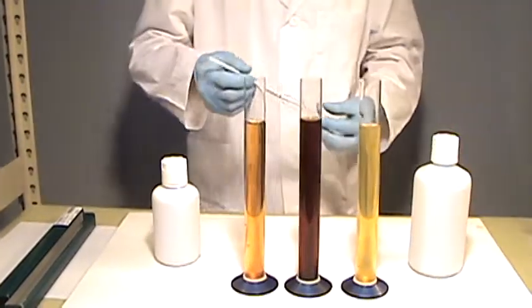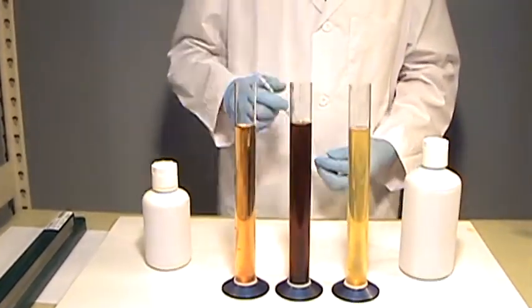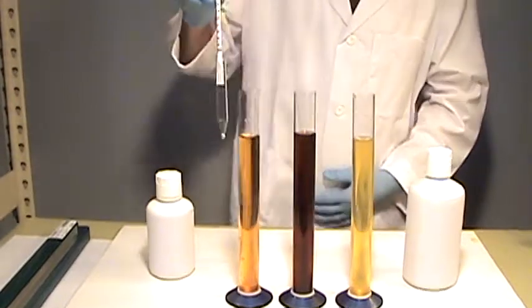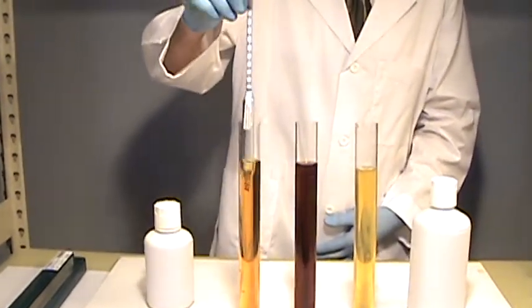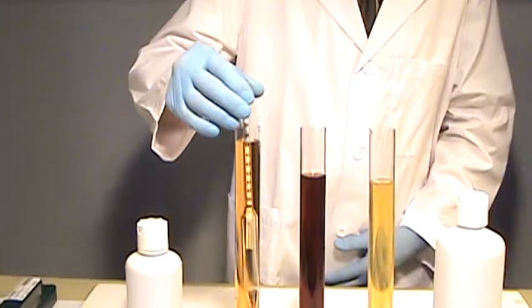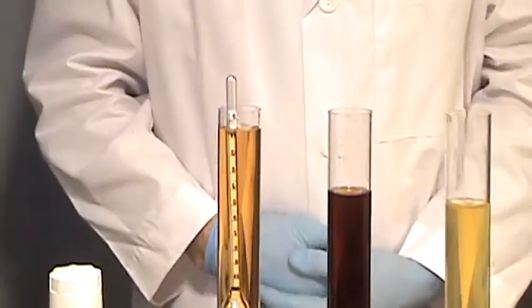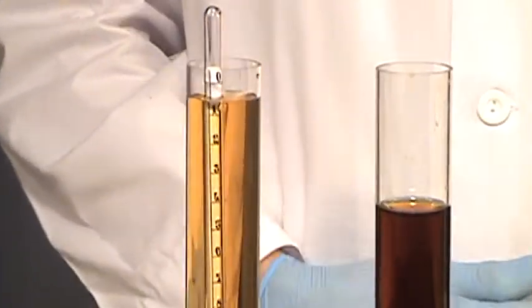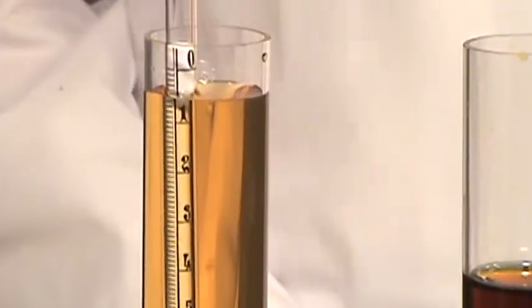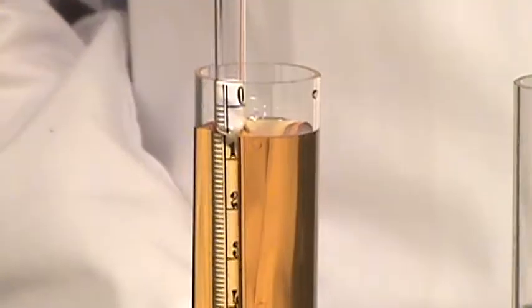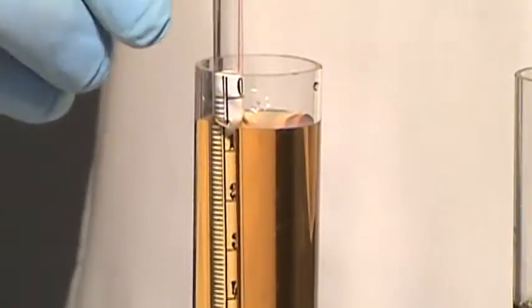Next, we're going to take a reading of the sample originating in the northwestern United States. We can see that the hydrometer floats at about a six or seven, somewhat better than the sample from the southwestern United States.